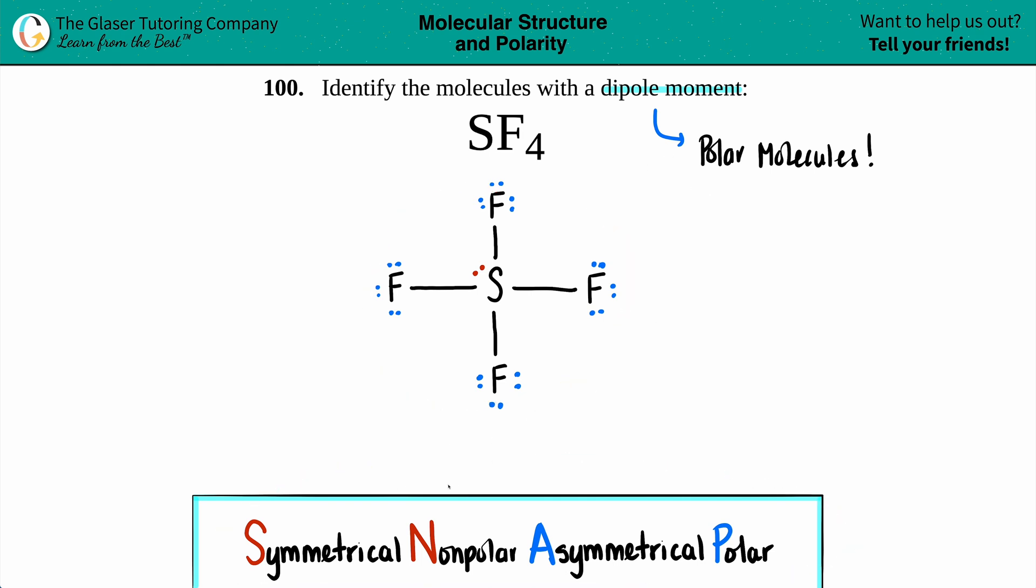Now think back to SNAP. S-N-A-P. If your molecule is completely symmetrical, it is nonpolar. And nonpolar molecules have no dipole moments. So dipole goes with polar. If your molecule is asymmetrical, it is polar. So there has to be an unequal pole somewhere.